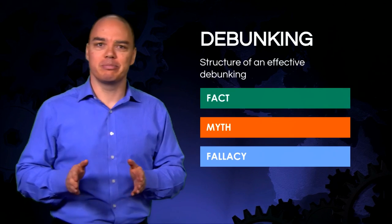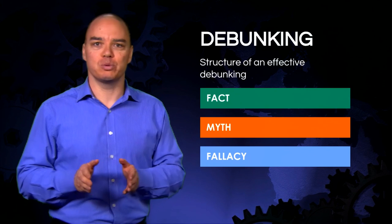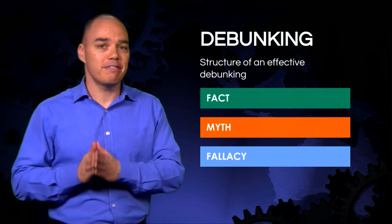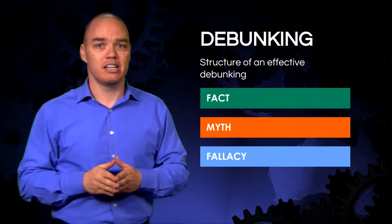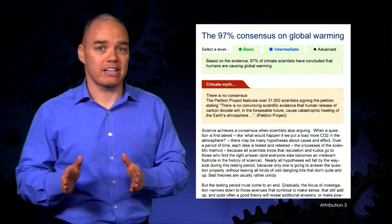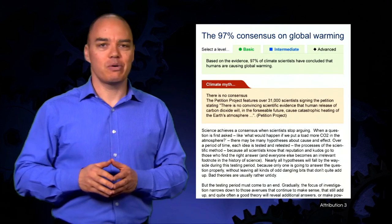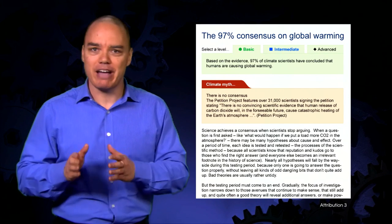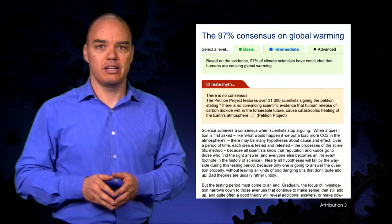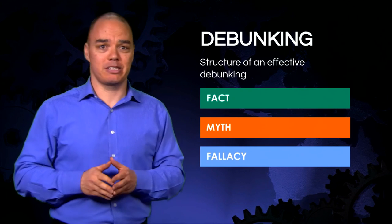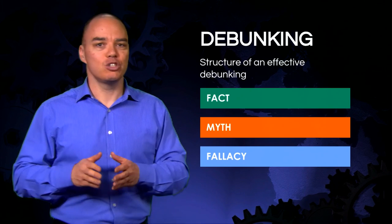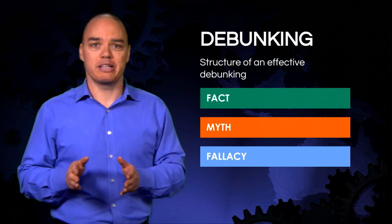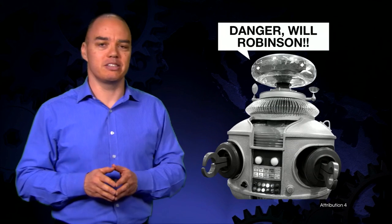To avoid this problem, the psychological research points to a specific structure to debunk myths: Fact, Myth, Fallacy. You want people to remember your facts, not the myth. So an effective debunking emphasises that key fact you want to communicate. While you don't want to put too much emphasis on the myth, you still do need to mention it. To avoid reinforcing the myth, warn people before you mention it.